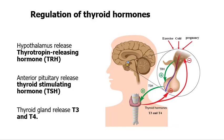TSH is involved in all aspects of thyroid hormone formation. For example, TSH increases the uptake of iodide within the thyroid gland, which is essential in the formation of thyroid hormones. TSH also plays a role in the synthesis of thyroglobulin and increases cellular processes within the colloid. We will be discussing the synthesis of thyroid hormones in the next class.